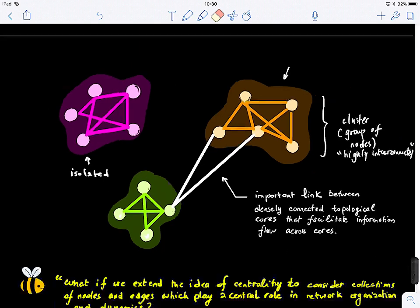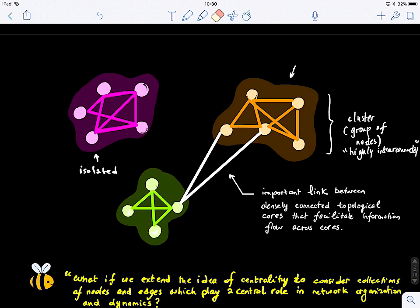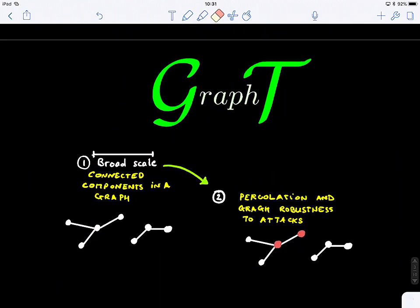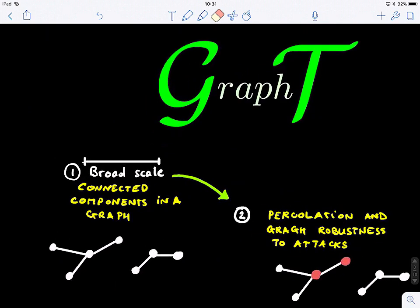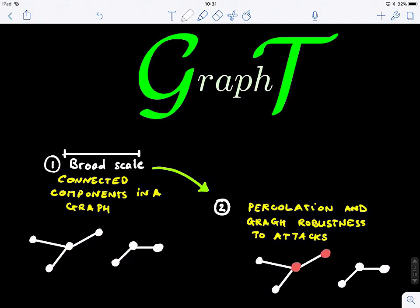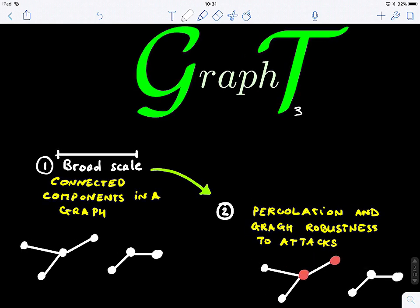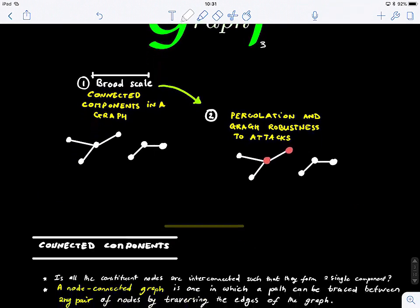So this is something we will explore more later on. But today what we will look at in this lecture is basically the notion or definition of connected components in a graph and also the percolation and graph robustness to attack. So this is in the second part. So these are two interdependent. So first I will explain or introduce what is a connected component in a graph.